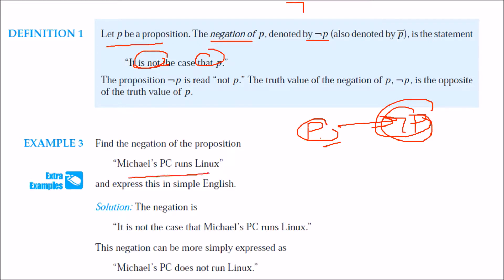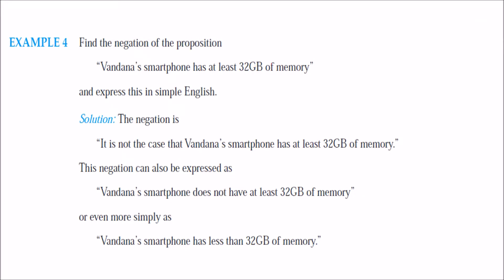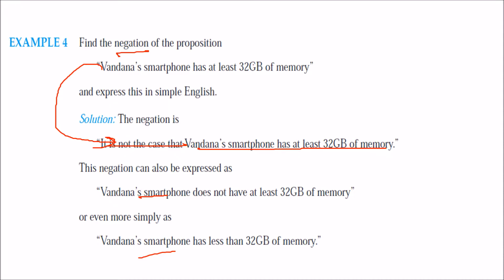Example: 'Michael's PC runs Linux.' To find the negation: 'It is not the case that Michael's PC runs Linux,' or simply 'Michael's PC does not run Linux.' Another example: 'Vandana's smartphone has at least 32 GB of memory.' The negation is: 'It is not the case that Vandana's smartphone has at least 32 GB of memory,' or 'Vandana's smartphone does not have at least 32 GB of memory,' or 'Vandana's smartphone has less than 32 GB of memory.' All these are correct negations.